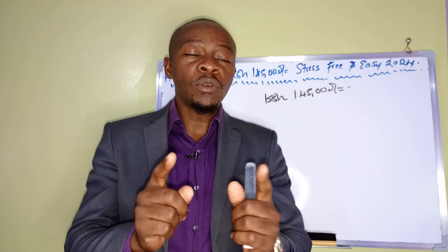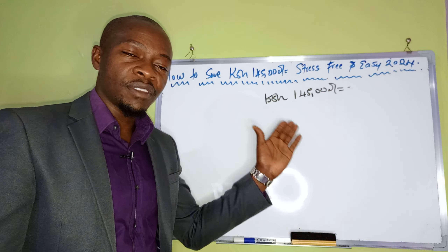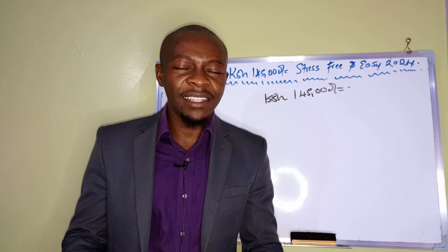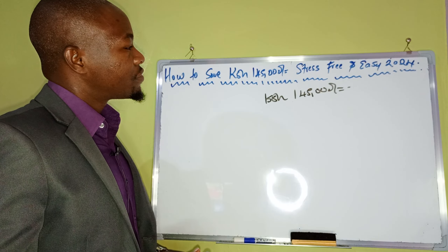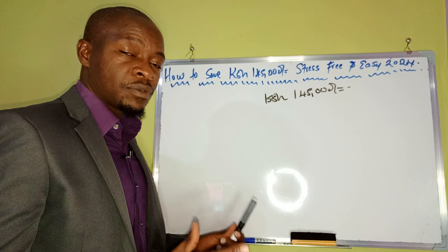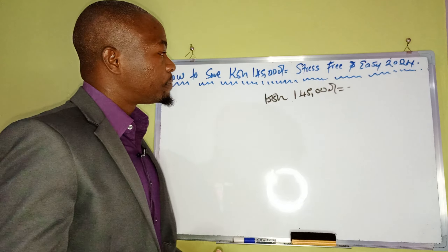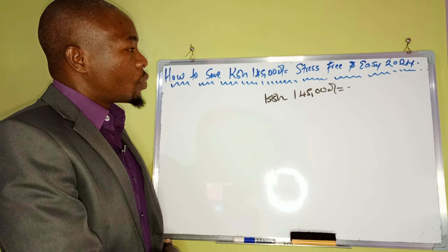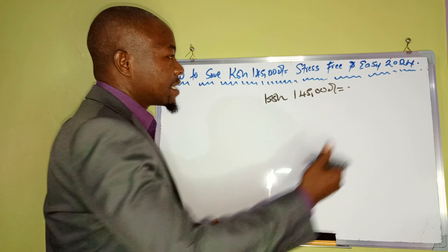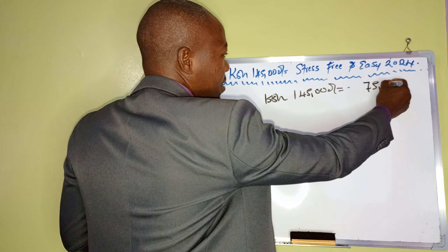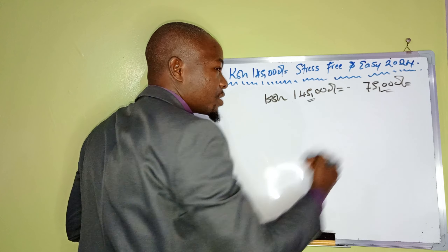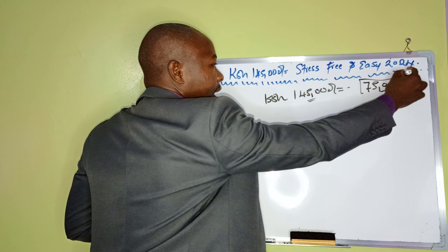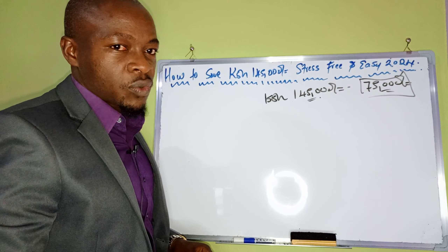One qualification to achieve this formula is just watching this video to the end — about 13 minutes. Here we are: we have a target of 145,000 Kenyan shillings to save in 2024. We can also save less, around 75,000. The point is, if you can manage the smaller amount, you can do this one too.